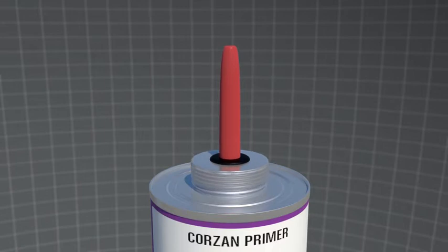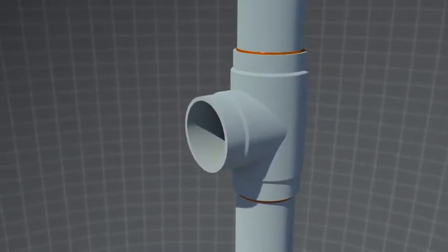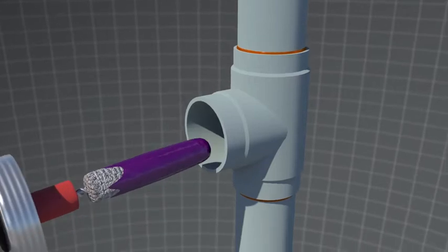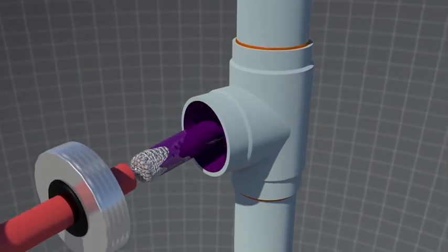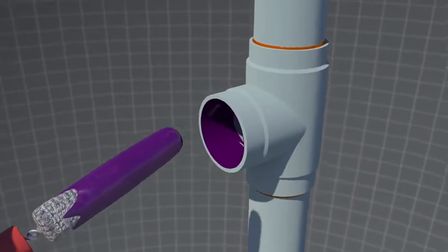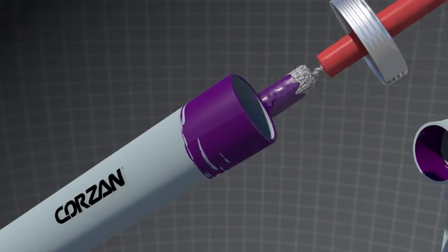With Corzan pipe and fittings, you must utilize a primer in the solvent weld process. Apply an even coat to the inside of the fitting. Use pressure to aggressively coat the surface and re-dip your dauber as needed. Then, apply an even coat of primer in the same manner to the outside surface of the pipe.